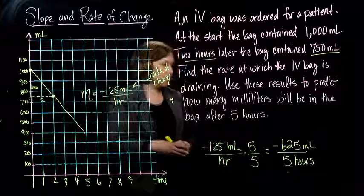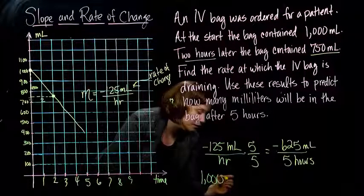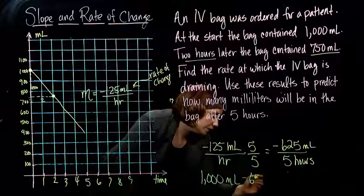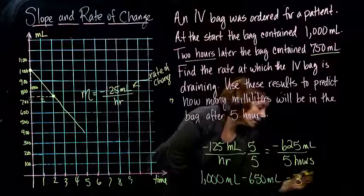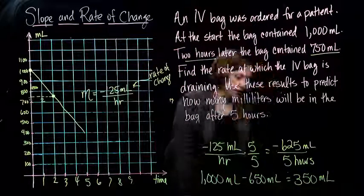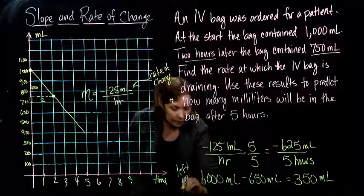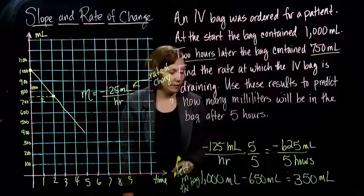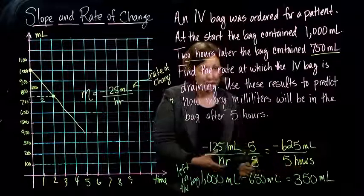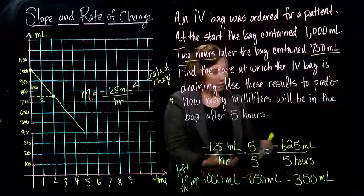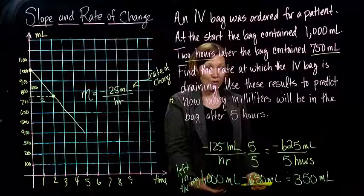So what's left in the bag, they asked us, well, that's what we started with, our 1,000 milliliters minus 650 milliliters will leave me with 350 milliliters. So this is what's left in the bag. So we just took our slope, multiplied by a factor to get that five hours in the bottom like we wanted, and that gave us the amount we've decreased in five hours. And then we take that amount and subtract it from what we started with, and we get our 350 milliliters.